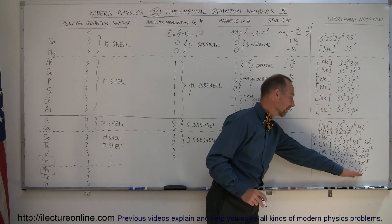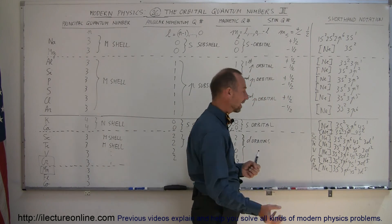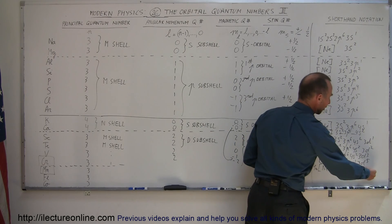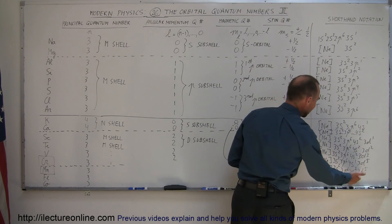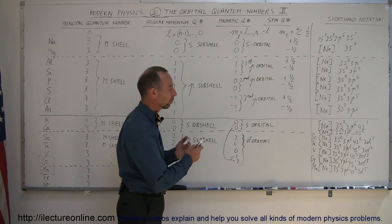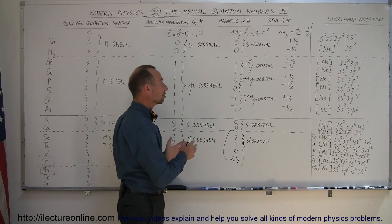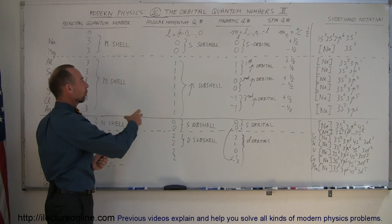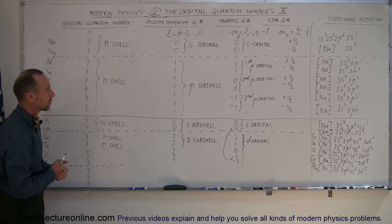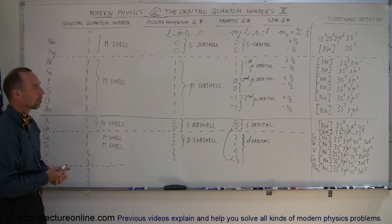A similar anomaly occurs again when the D-orbitals are nearly full at 3d⁹: one electron is again pulled from the 4S-orbital to complete the ten-electron 3d¹⁰ configuration, and then the very next element refills the S-orbital. Hopefully this gives some introduction to how quantum numbers work as electrons are placed in orbits around the nuclei of elements on the periodic table, at least for the first 20 or so elements.